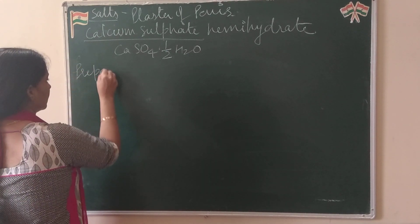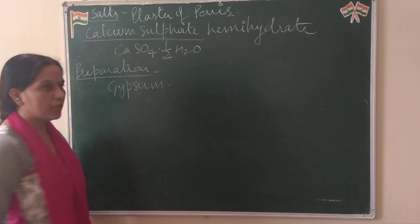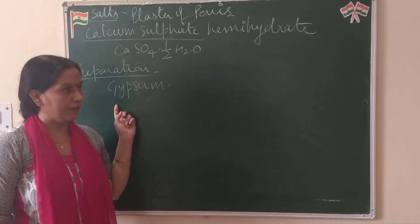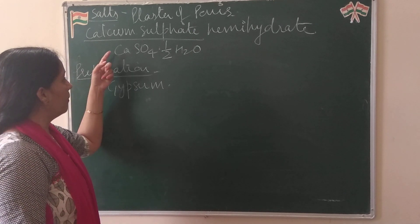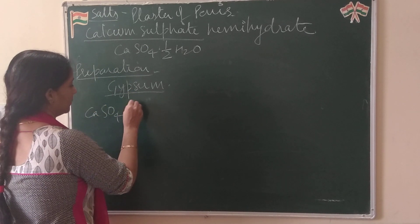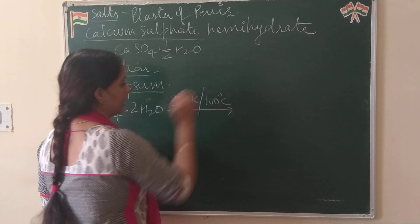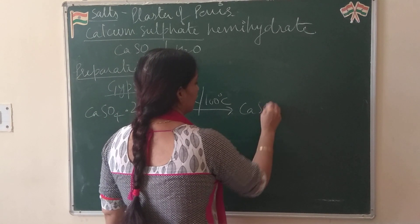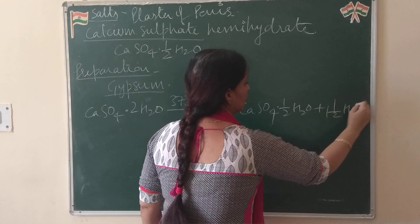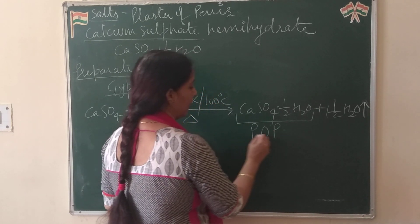How is it prepared? There is one more compound called gypsum, which is a hard solid substance. Its formula is CaSO4·2H2O. When this hard solid gypsum is heated at 100 degrees Celsius or 373 Kelvin, some water evaporates and a powder form of calcium sulfate hemi-hydrate is obtained. The reaction gives CaSO4·½H2O (POP) plus 1½ molecules of water evaporating. So this product is POP — plaster of Paris.